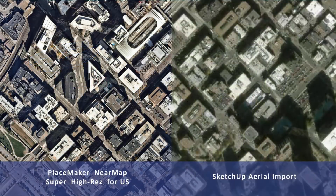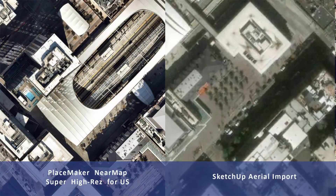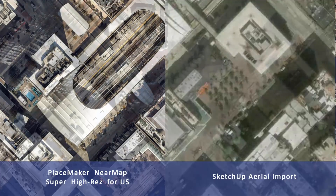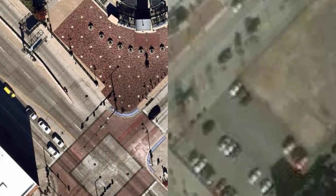With Placemaker version 2, we've introduced Near Map super high resolution aerial imports for SketchUp for the United States. This requires an in-app purchase of credits, but you get access up to 7 cm or 2.8 inch high resolution, high quality crisp aerials, as you can see in the examples here on the screen.